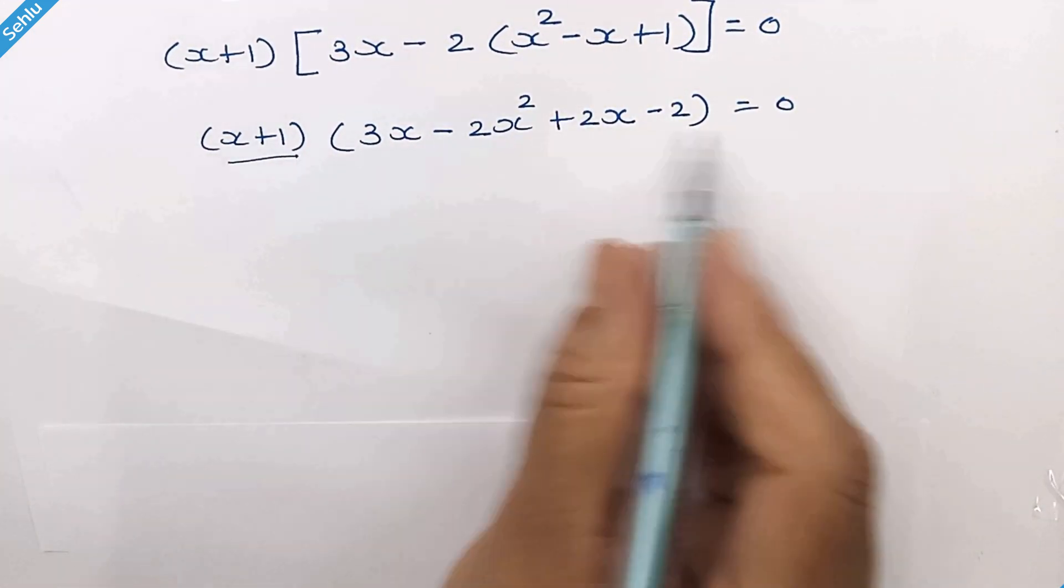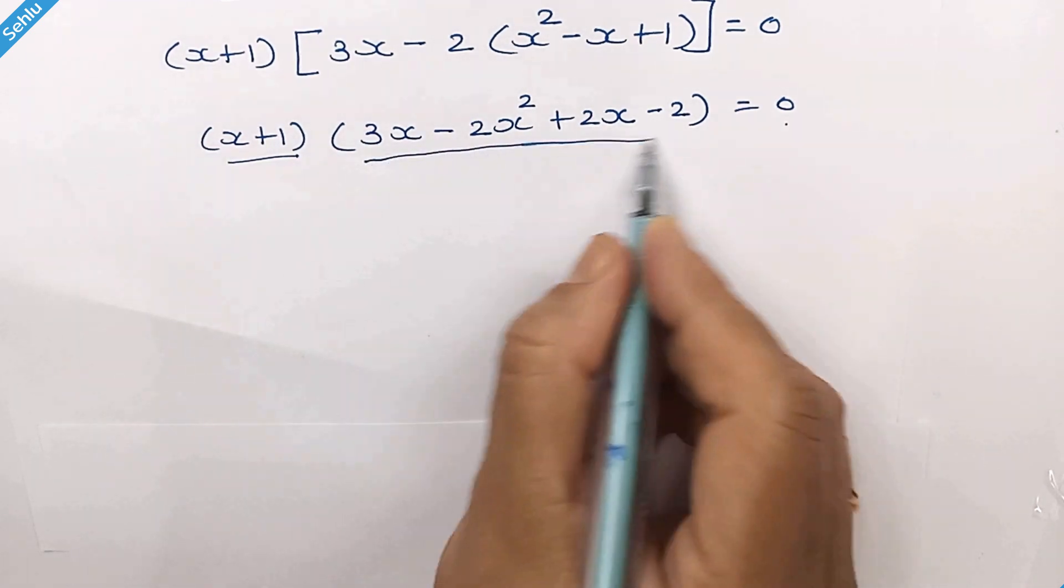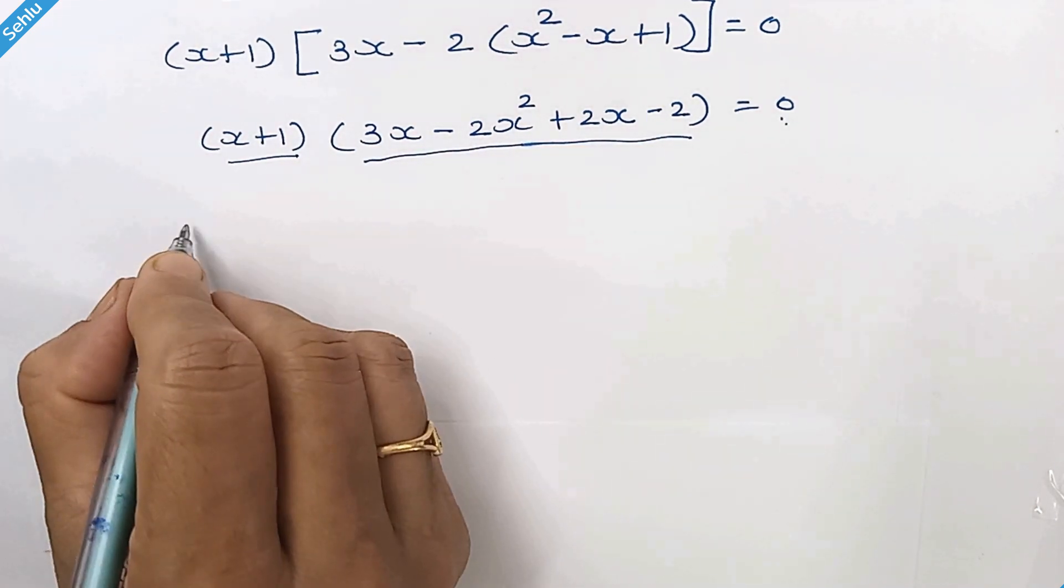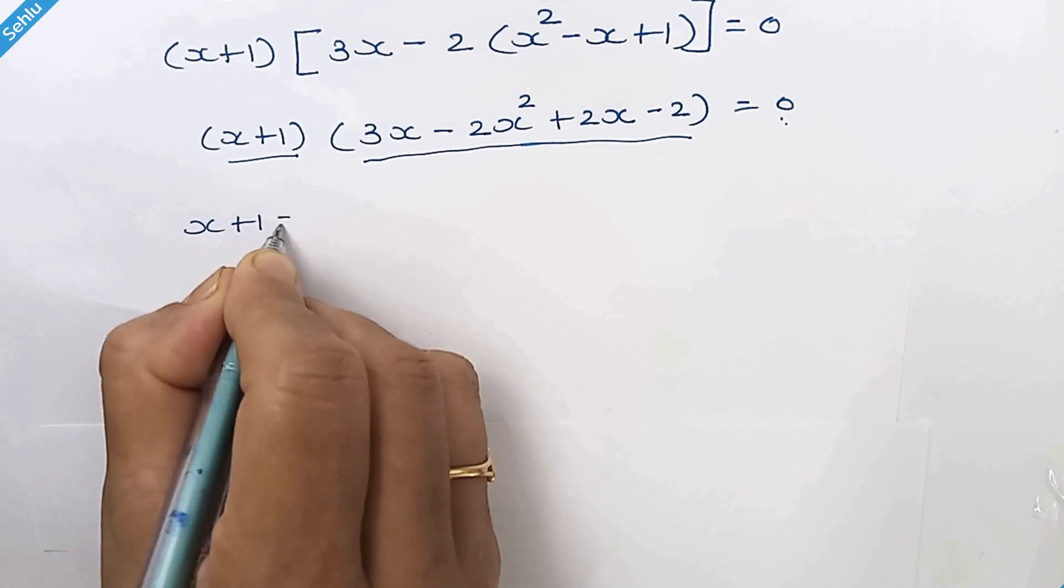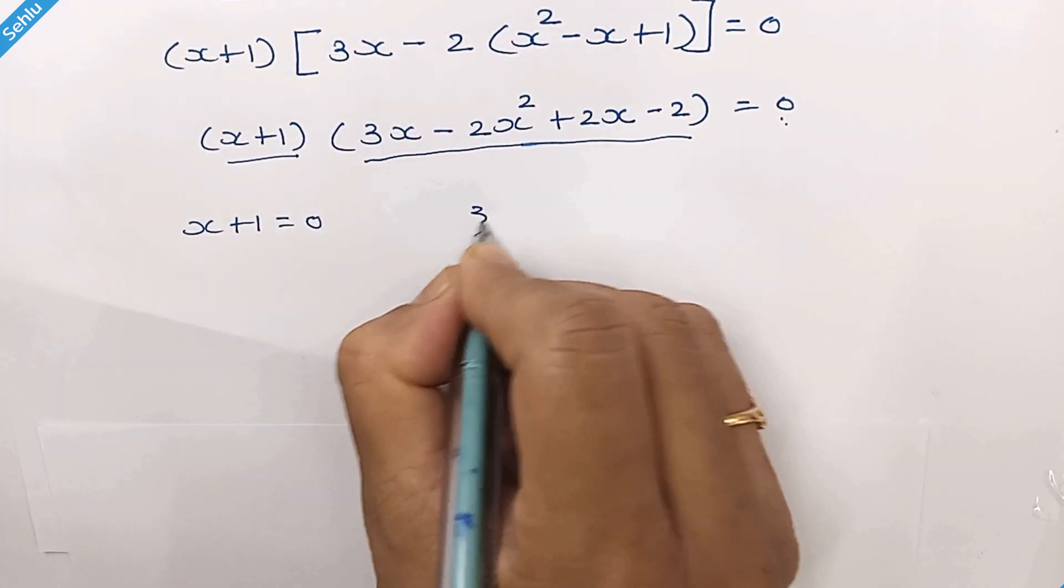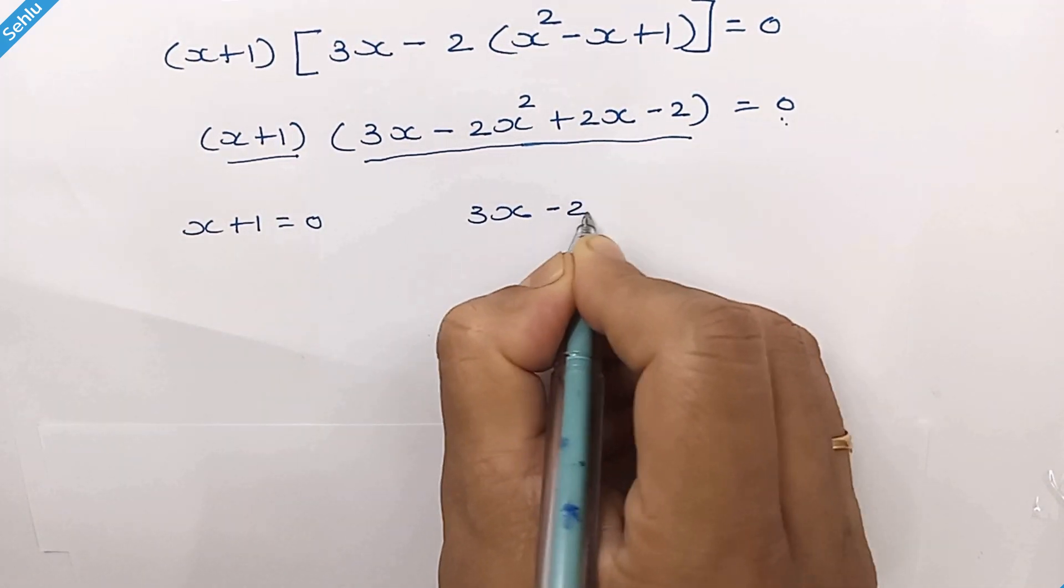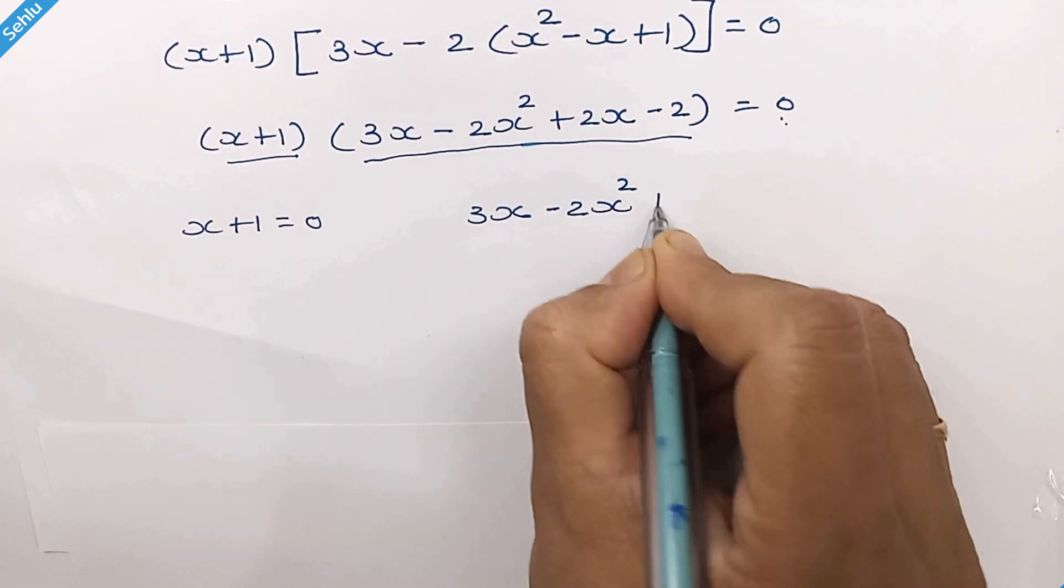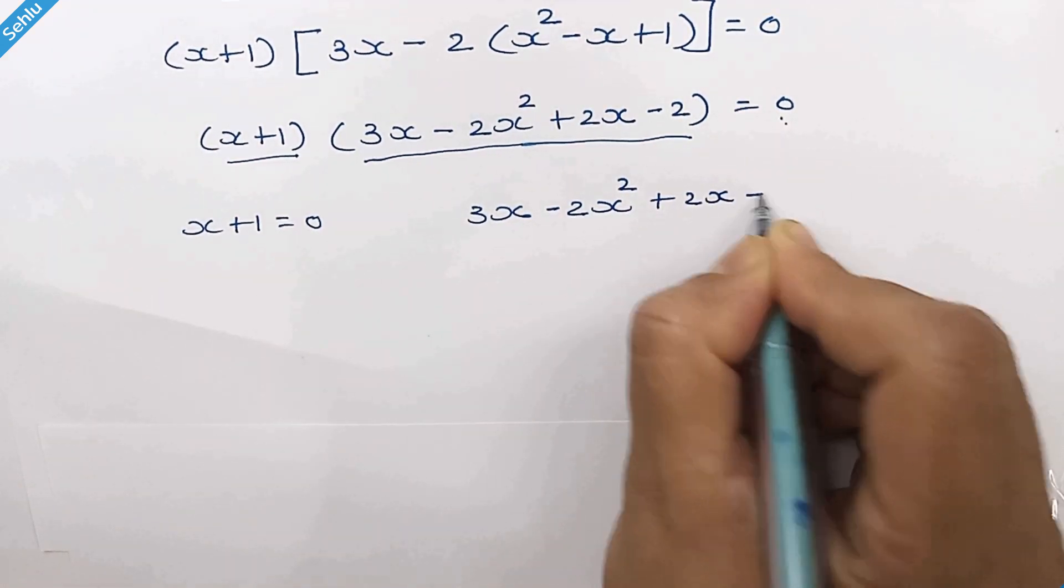Now either this is 0 or this is 0. So we can compare x plus 1 is equal to 0 and 3x minus 2x square plus 2x minus 2 is equal to 0.